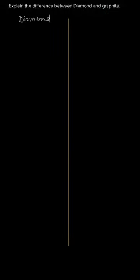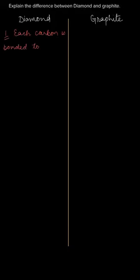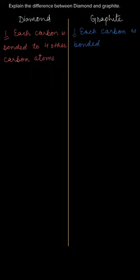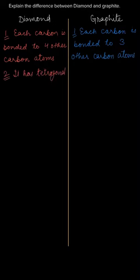In this question we have to tell the differences between diamond and graphite. Both of them are the allotropic forms of carbon. In diamond, each carbon atom is bonded to four other carbon atoms, whereas in graphite each carbon is bonded to three other carbon atoms. Diamond has a tetragonal three-dimensional structure.